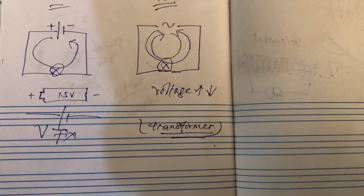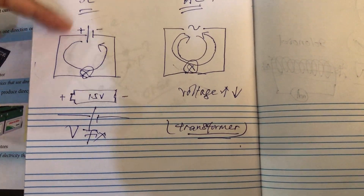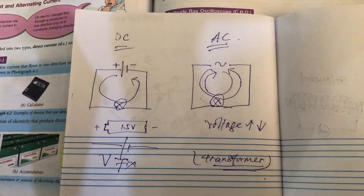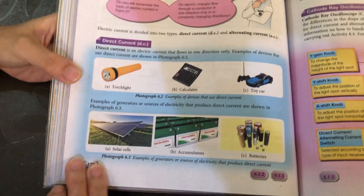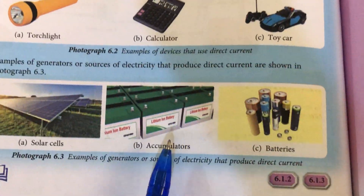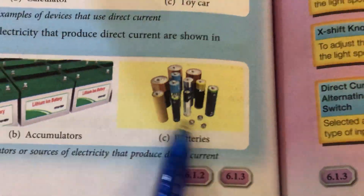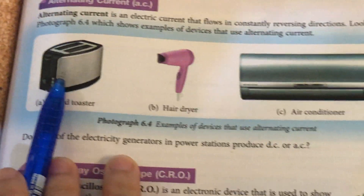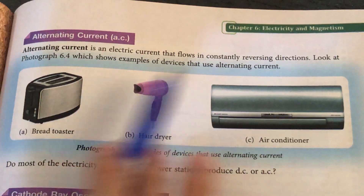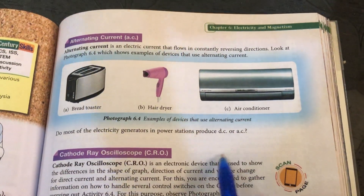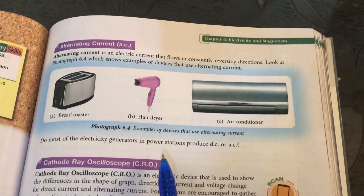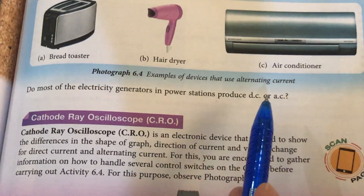So now you understand we have two types of current: direct current and alternating current. Direct current flows in one direction; alternating current keeps changing direction at a certain frequency. Examples of direct current include solar cells, car batteries, and normal dry cell batteries. Almost all electrical devices we use at home — like toasters, hair dryers, air conditioners, and TVs — use alternating current. The electric current produced by power stations is actually alternating current.